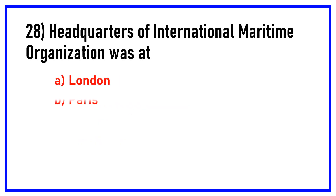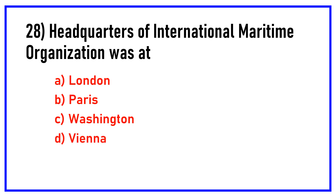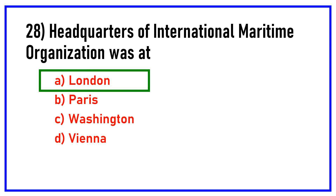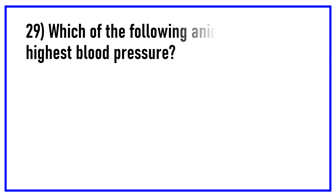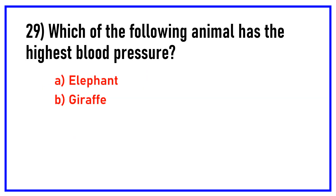Headquarters of International Maritime Organization is situated in. Options are: London, Paris, Washington, Vienna. Answer: London. Which of the following animals has the highest blood pressure? Options are: elephant, giraffe, cat, tiger. Answer: Giraffe.